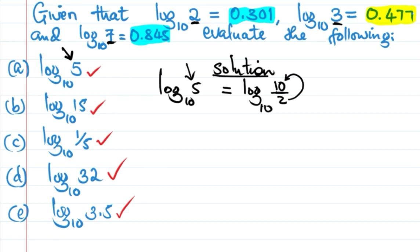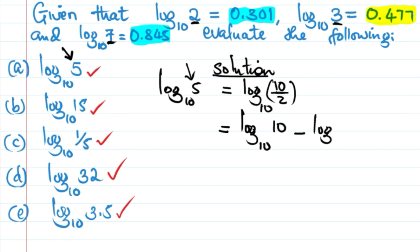Since we are dividing, we can apply the laws of logarithm — division becomes subtraction. So this can be written as log of 10, base 10, minus log of 2, base 10. Remember, log of a number whose base equals that number equals 1, so log of 10 base 10 is 1.